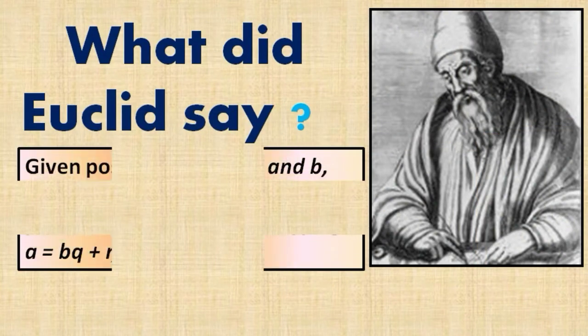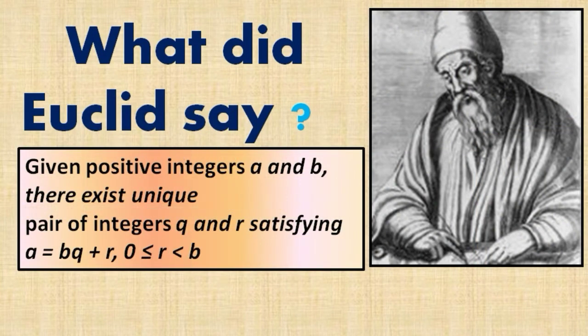What did Euclid say? Given positive integers a and b, there exists a unique pair of integers q and r satisfying a equals bq plus r, where 0 is less than or equal to r is less than b. This is called Euclid's division lemma.